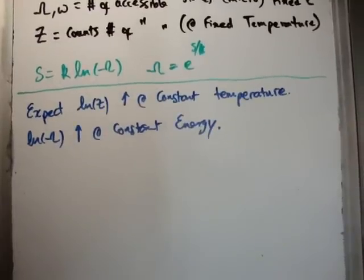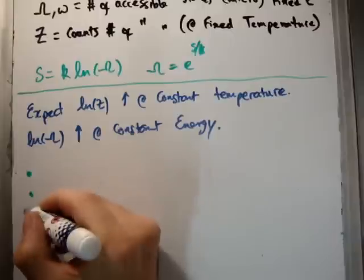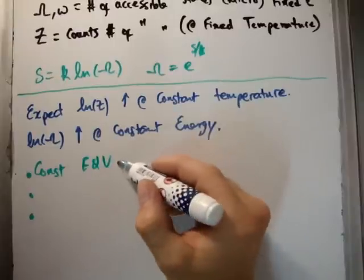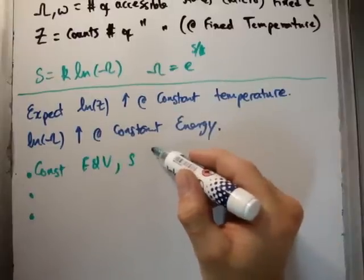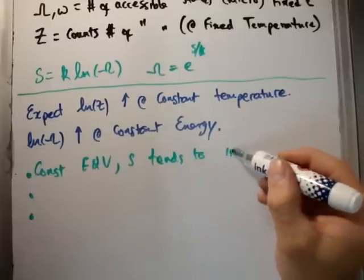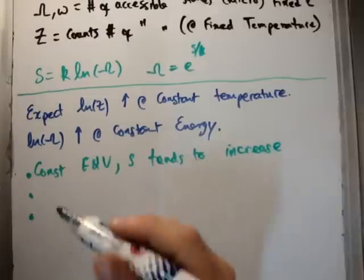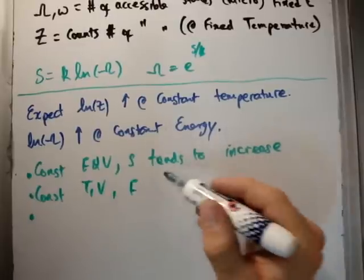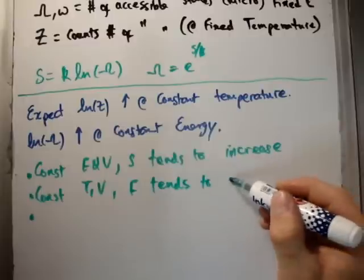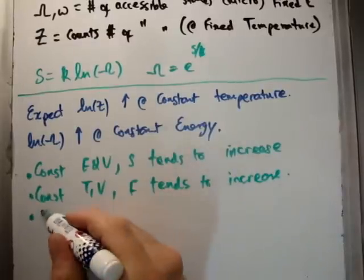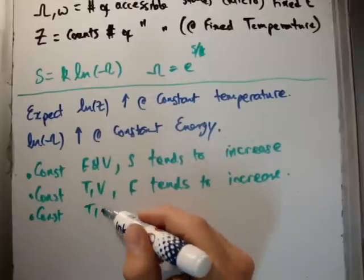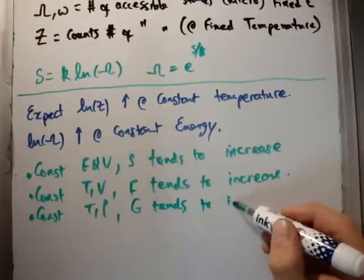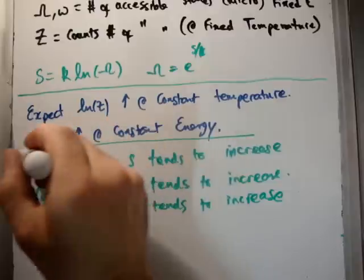From our study of thermodynamics — and you can look at my videos on thermodynamics — we made the following three conclusions. At constant energy and volume, the entropy S tends to increase. At constant temperature and volume, the Helmholtz free energy F tends to increase. And at constant temperature and pressure, the Gibbs free energy tends to increase. I did videos on each of these three.